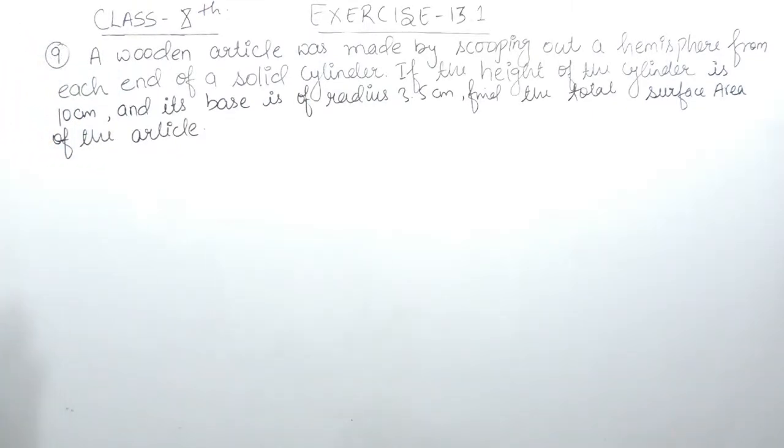The question says, a wooden article was made by scooping out a hemisphere from each end of a solid cylinder. If the height of the cylinder is 10 cm and its base is of radius 3.5 cm, you have to find the total surface area of this article.